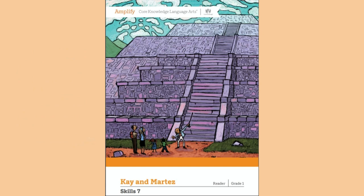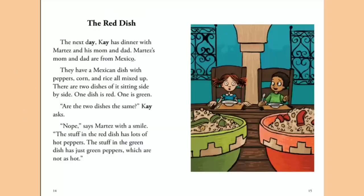That brings us to our story for today: The Red Dish. The next day, Kay has dinner with Martez and his mom and dad. Martez's mom and dad are from Mexico. They have a Mexican dish with peppers, corn, and rice all mixed up. There are two dishes sitting side by side — one dish is red, one dish is green. 'Are the two dishes the same?' Kay asks. 'Nope,' says Martez with a smile. 'The stuff in the red dish has lots of hot peppers. The stuff in the green dish has just green peppers, which are not as hot.'